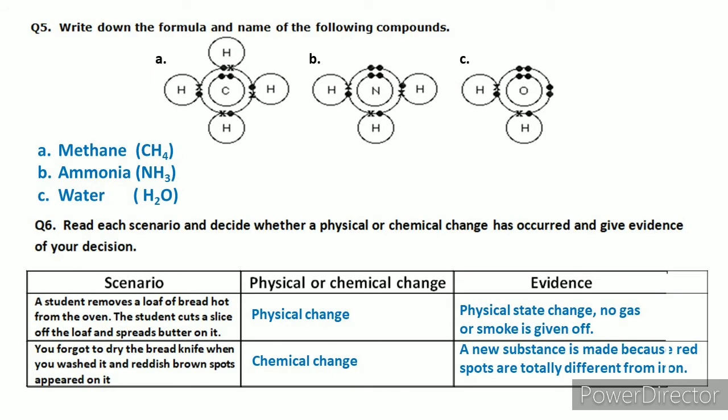Now we have to write the formula and name of the following compounds. Students, you are given three compounds A, B, and C, each with a structure. For compound A, there is a carbon in the center with four hydrogens on four sides. The formula is CH4. Since there is only one carbon we don't write the 1, and four hydrogens, so the formula is CH4. CH4 is the formula of methane.